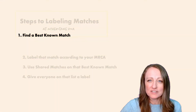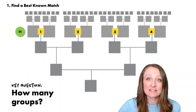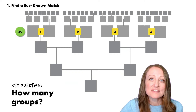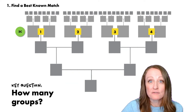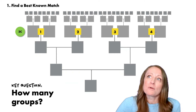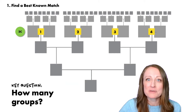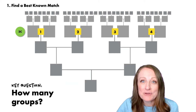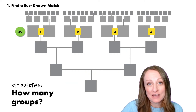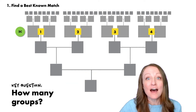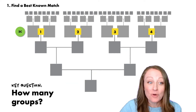So let's start with a little bit of background. If you're going to find a best-known match, that's someone who's a descendant of ancestors you already know. Now you might be thinking, why would I do that? I already know these people — I'm looking for people I don't know. Well, using known matches to find unknown matches is actually the key to this whole research.